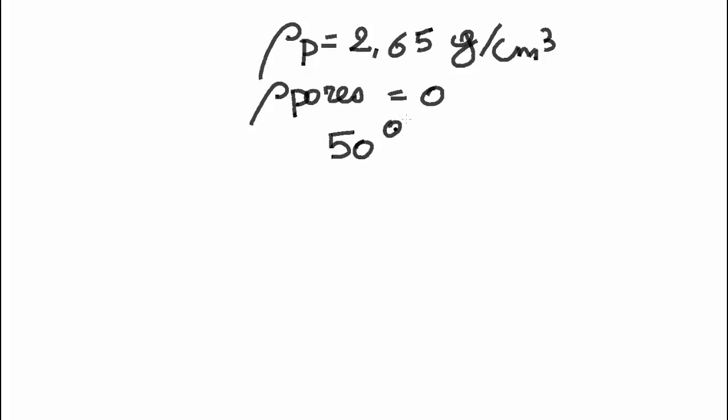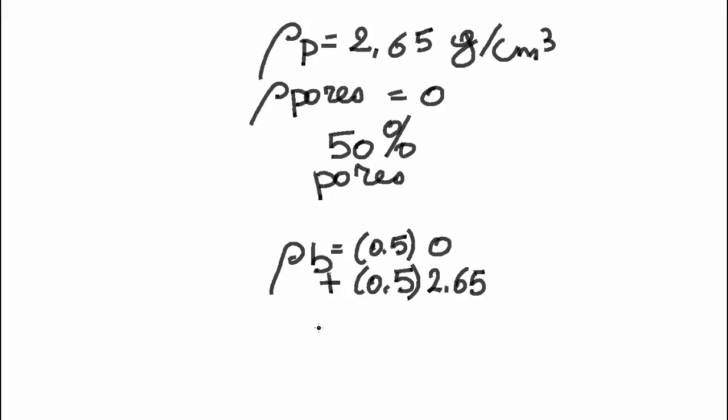Let me show you the link between bulk density and porosity. We know that the particle density is 2.65 g per cm³. Soil pores have no density, there is no mass. Most soils have a porosity of about 50%. The bulk density will be 50% of pores with density 0, plus 50% of solid material with density 2.65. This is 1.3 g per cm³.